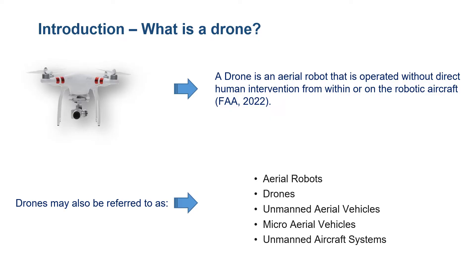A drone is generally defined as an aerial robot that has no pilot on board, that can fly autonomously on its own or be remotely controlled by a user. A quick review of the literature will reveal that drones appear under different names, terms and abbreviations. However, every term and abbreviation is basically describing the drone from a different perspective. Therefore, for the purpose of our study, we'll continue in calling them drones.